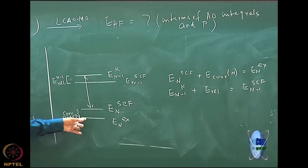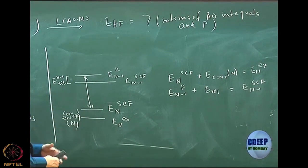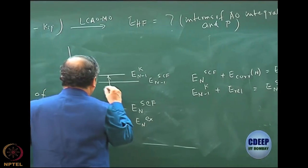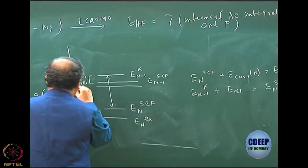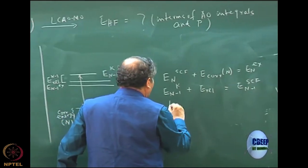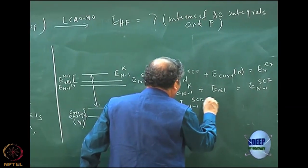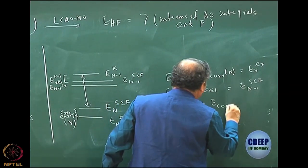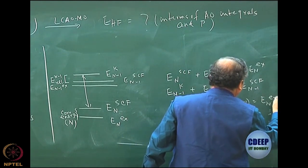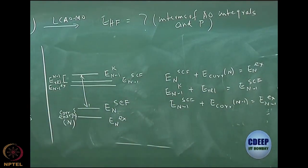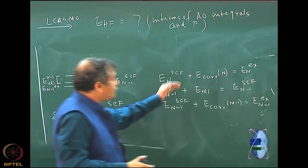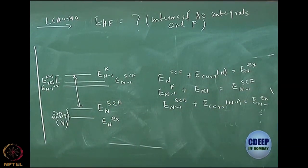So I can write E_{N-1} Koopmans' plus the relaxation energy, which is again negative, gives me E_{N-1} SCF. However, to compare properly, I must also include correlation here. What will correlation do? It will push it down further to E_{N-1} exact. So I can write E_{N-1} SCF plus E_corr(N-1) gives me E_{N-1} exact. I am using a sign convention that each of these correlation terms is negative.